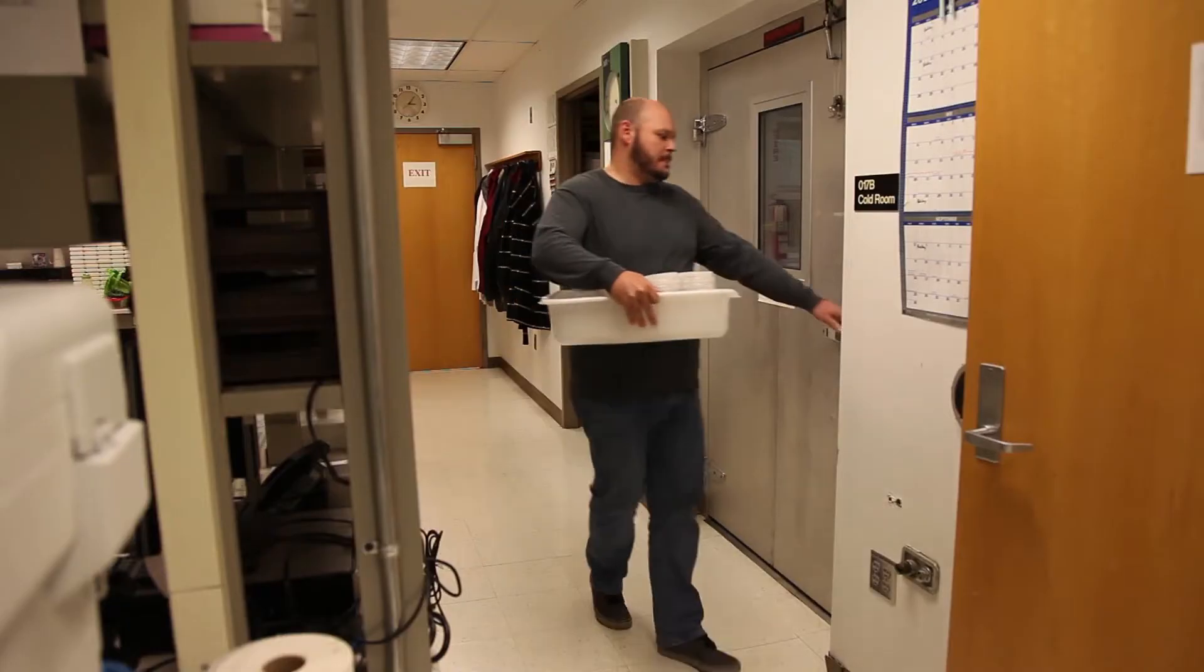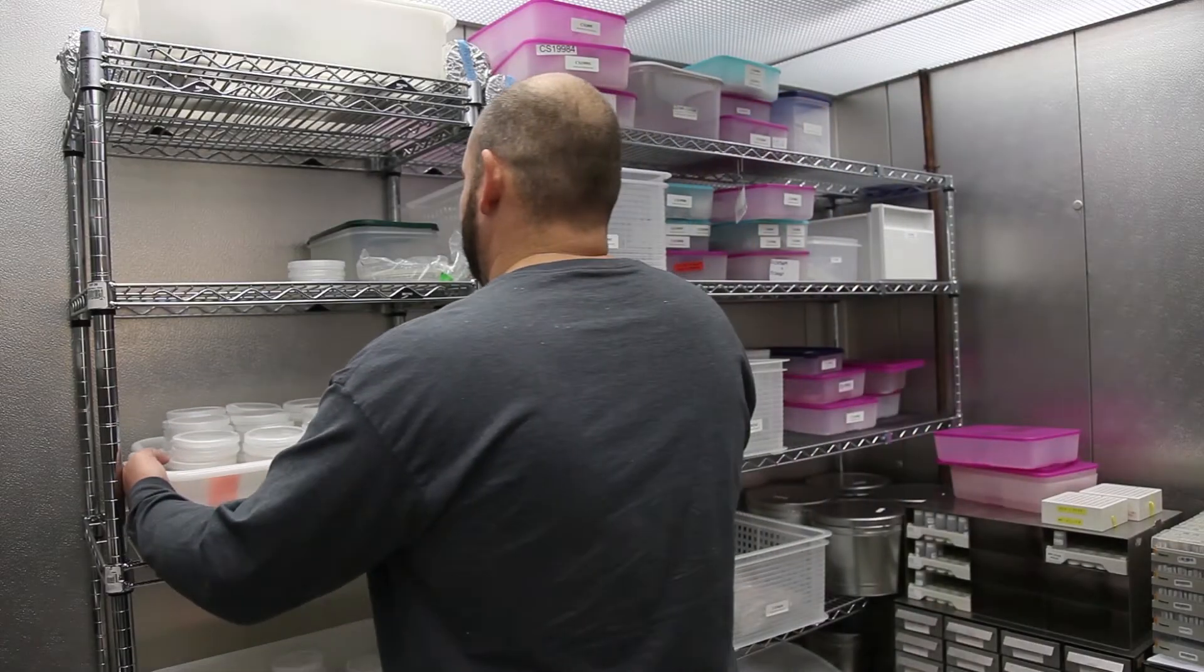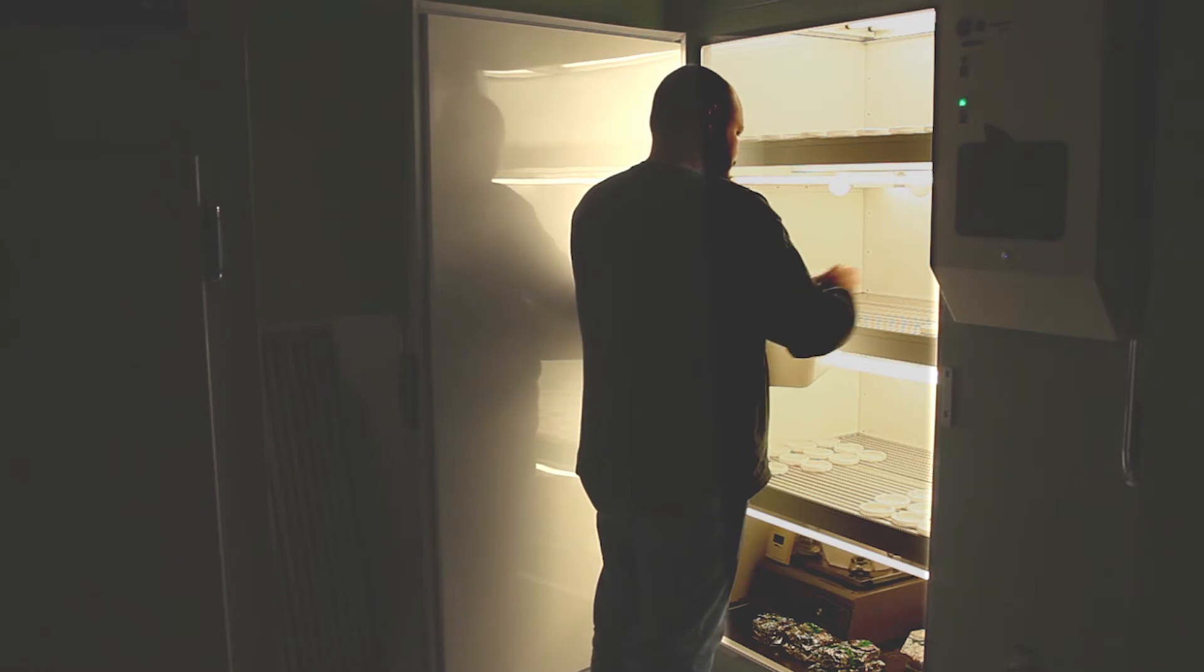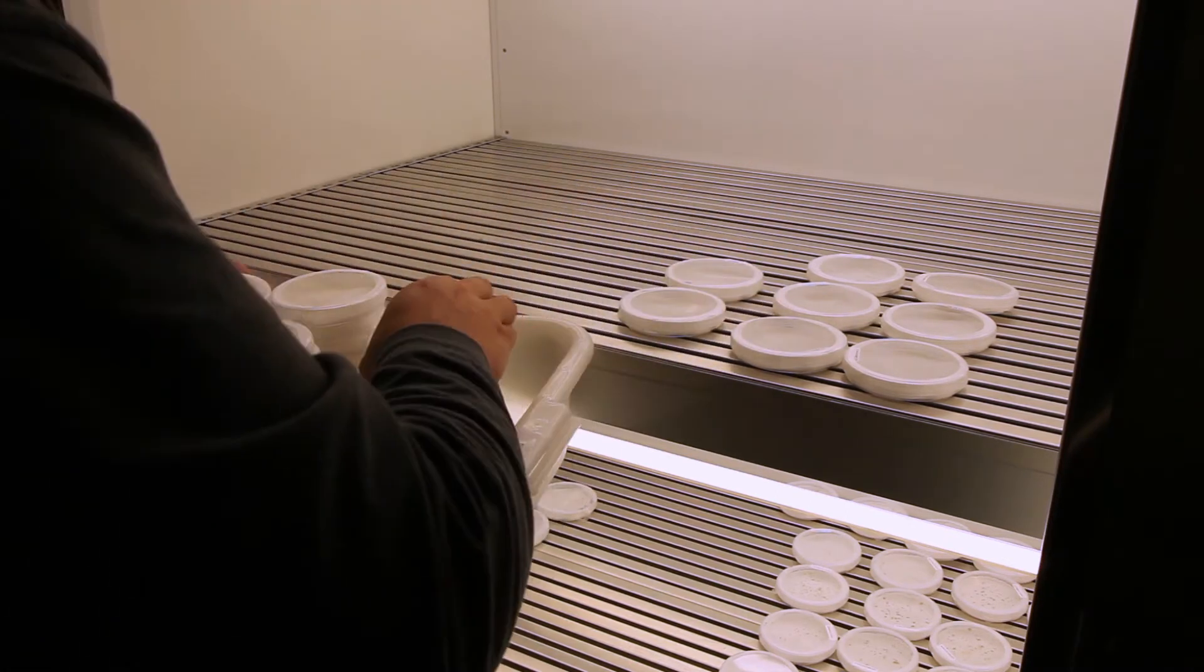To promote and synchronize germination, give the seeds a cold treatment by refrigerating the plates for three days at four degrees Celsius. Once the cold treatment is complete, remove the plates and place them in the growth environment for seven to ten days. Recommended growth conditions are 22 degrees Celsius with continuous light.